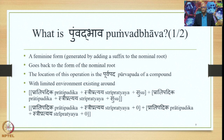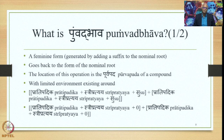Let us revisit the question: what is Pumbadbhava? A feminine form generated by adding a suffix to the nominal root — the Pratipadhika — goes back to the form of the nominal root. This is called Pumbadbhava. The location of this Pumbadbhava is the Purvapada of a compound, and it operates within a limited environment existing in the Purvapada or in the Uttarapada, as we studied in the previous lecture.